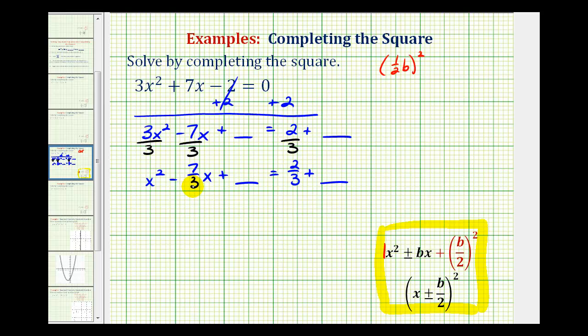Let's determine what the constant needs to be. We're going to have 1/2 times -7/3, and then we're going to square this. This is going to be (-7/6)², which equals 49/36. We need to add 49/36 here to make this a perfect square trinomial. If we add this to the left side, we must do the same to the right side.